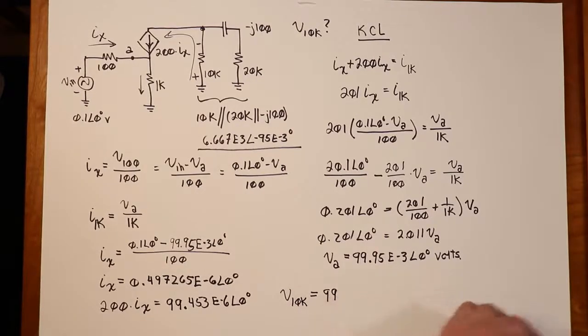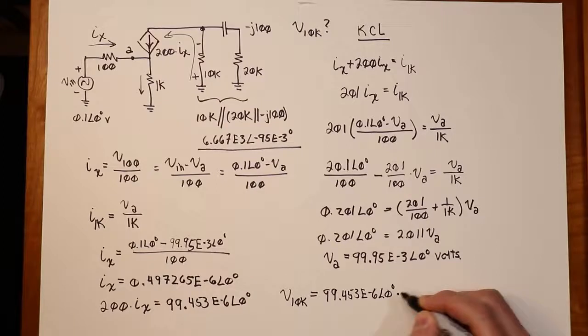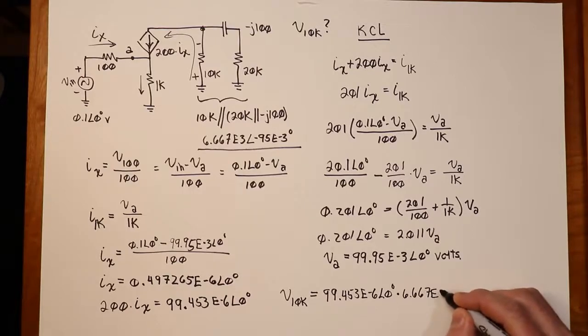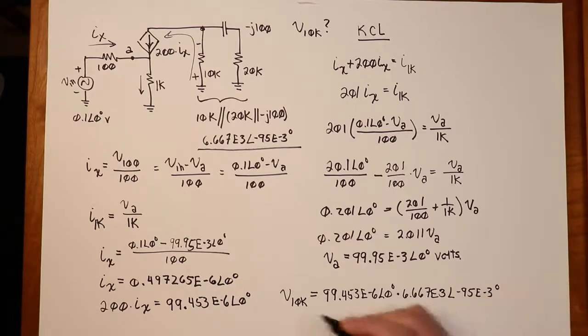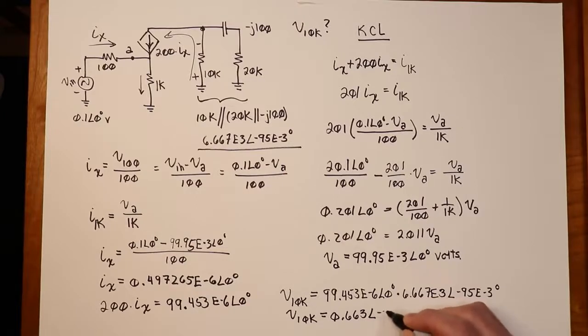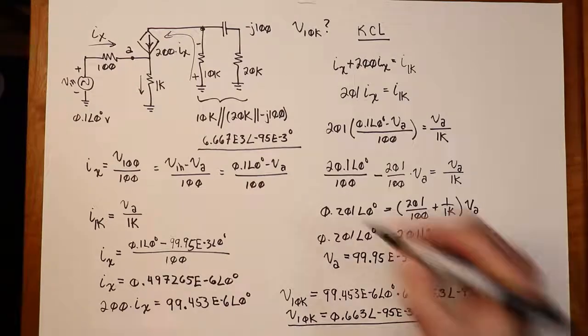So you've just got about 100, roughly, if you just want to do an approximation on this, about 100 microamps. So if we want to be accurate about it, we'll take our 6.667K ohms at our milli degrees. Multiply that up, and you're going to wind up with a final value of just shy of two-thirds of a volt: 0.663 volts at a tiny little angle of negative 95 milli degrees. And there we have it.